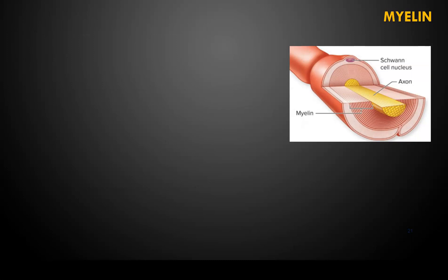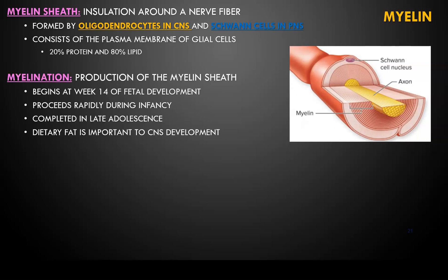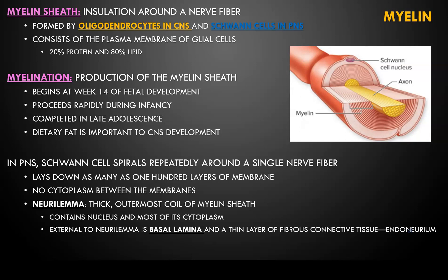Let's talk about the myelin sheath in more detail. The myelin sheath is insulation around a nerve fiber formed by oligodendrocytes in the central nervous system and Schwann cells in the peripheral nervous system. It consists of the plasma membrane of glial cells — about 20% protein and 80% lipids. Myelination begins at week 14 of fetal development, proceeds rapidly during infancy, and is completed in late adolescence. Dietary fat is important for proper CNS development. In the peripheral nervous system, Schwann cells spiral repeatedly around a single nerve fiber, laying down as many as 100 layers of membrane with no cytoplasm between them. The neurolemma is the thick outermost coil, containing the nucleus and most of the cytoplasm. External to the neurolemma is the basal lamina and a thin layer of fibrous connective tissue called the endoneurium.